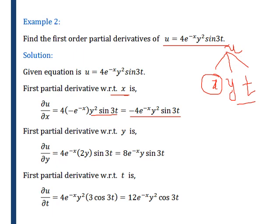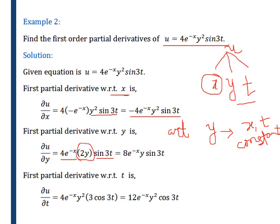Now we find the partial derivative with respect to y. When we find differentiation with respect to y, we will keep x and t constant. Here, 4 is constant, e raised to minus x is constant, sin 3t is constant, and differentiation of y square will be 2y. So the resulting derivative is 8 e raised to minus x, y, sin 3t.